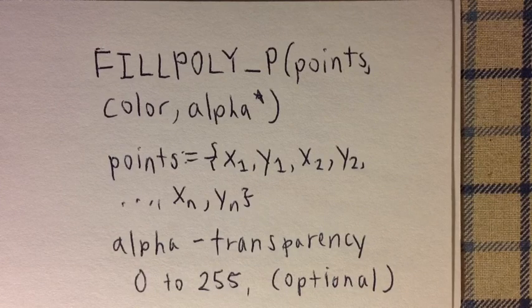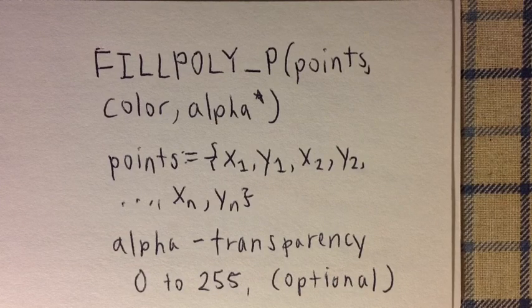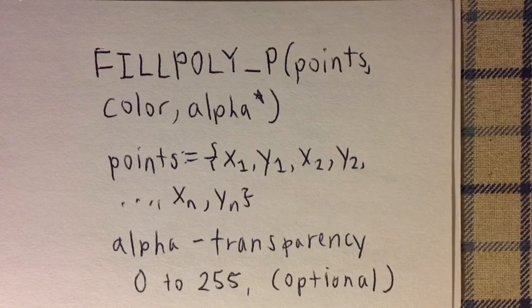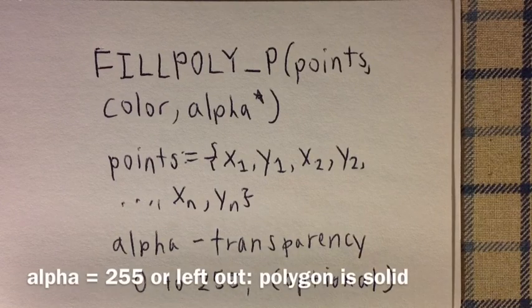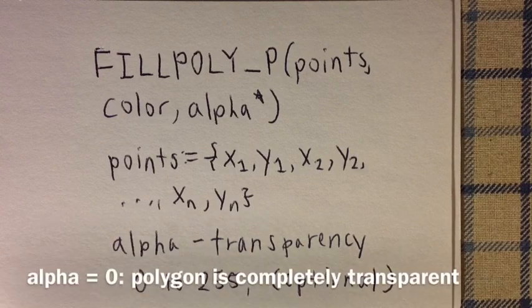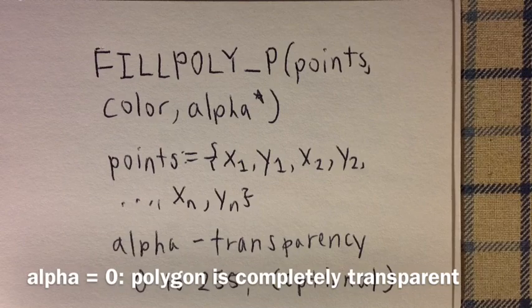Alpha is your transparency factor that ranges from 0 to 255. If alpha is set to 255 or left out, the polygon is going to be a solid looking object. If alpha is 0, the polygon is going to be completely transparent.